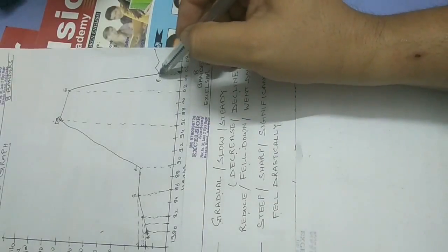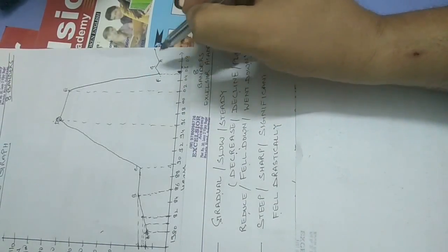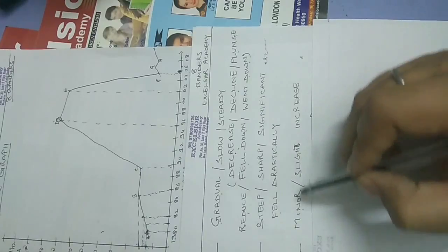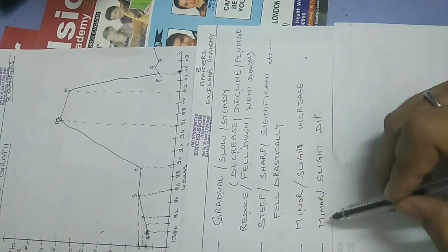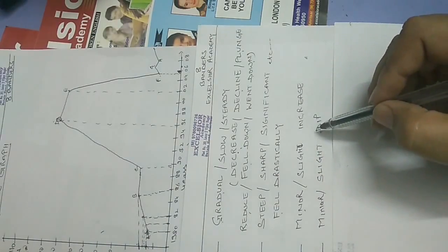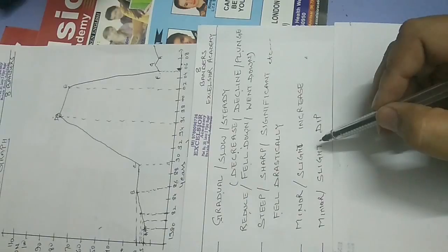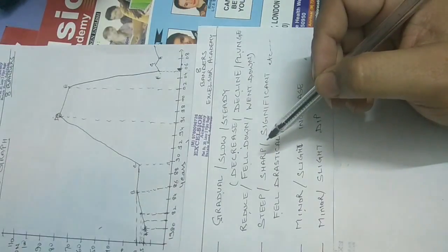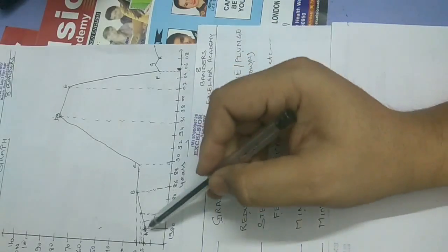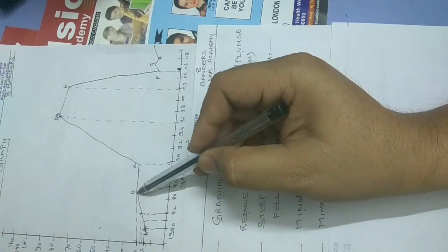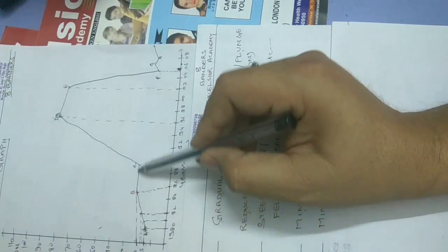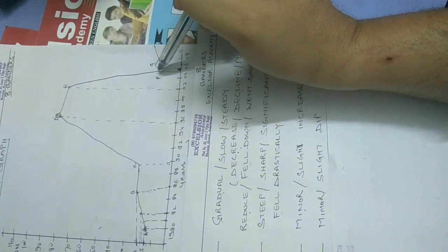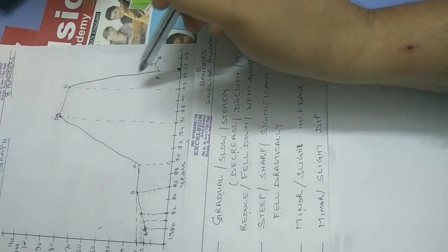From F to G there is a minor or slight increase, and from G to H there is a minor or slight dip — a minor increase followed by a minor dip. So this is the body of the graph and how we explain the changes: initially a steady incline, then it remained constant, then a steep sharp incline, then a gradual fall, then a significant decline, then a minor increase and a minor decline.